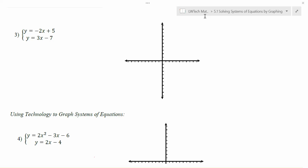Let's consider another system of equations here. Suppose that we're looking at y equals negative 2x plus 5. In this case, our slope is negative 2 over 1. Our y-intercept is 5.